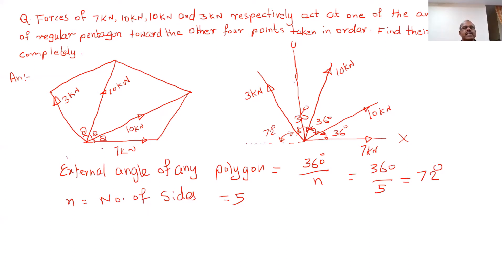The question has forces of 7 kN, 10 kN, 10 kN, and 3 kN acting at a corner of the regular pentagon towards the other corners. I have drawn the regular pentagon here. The first force 7 kN acts along one side, then 10 kN acts to the next corner, another 10 kN to the next, and 3 kN to the last. The angle between consecutive forces is theta.